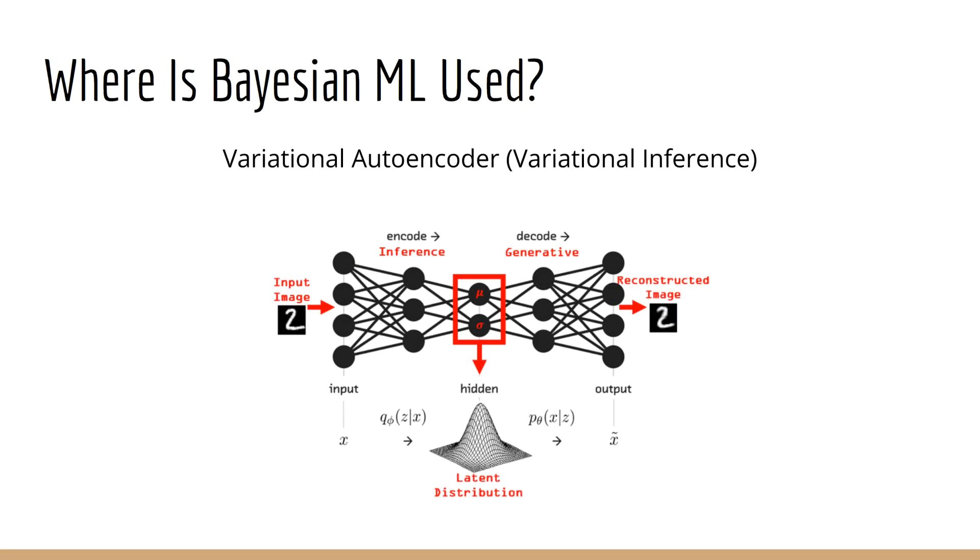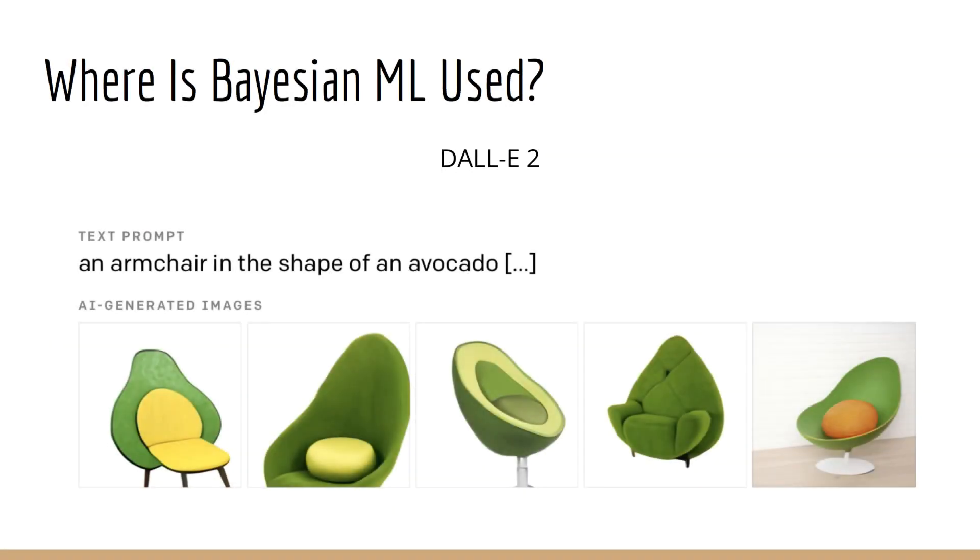Another example is the variational autoencoder, which is also based on Bayesian machine learning. This uses a technique known as variational inference, which has become an important tool in modern deep learning. Finally, you may be surprised to hear that Bayesian machine learning is even used for the latest state-of-the-art transformer models, such as DALL-E 2.